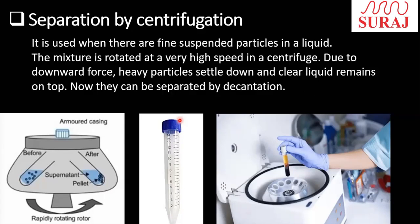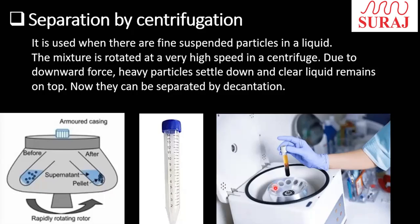In centrifugation, we use a centrifuge tube made of plastic. We fill our solution into the tube and close it. We place the tube in the centrifuge machine, which has slots to hold the tubes. Importantly, we place another tube just opposite — either another sample or a tube filled with water — to keep the machine balanced when it rotates.